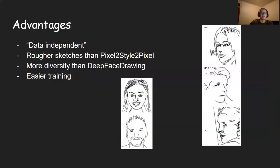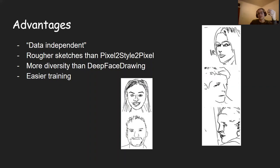One advantage of this method is that it's relatively data independent — though implicitly, the massive dataset that StyleGAN was trained on is leveraged through the frozen model. Our approach uses rougher sketches than Pixel2Style2Pixel, as visible in the images on the right — their sketches are much more detailed and they didn't remove the background. Deep Face Drawing, shown on the left, uses considerably less detailed sketches but only handles front-facing images. Both methods are also more data-intensive and computationally heavy than ours.